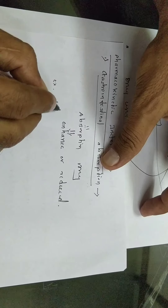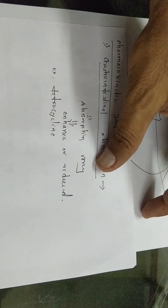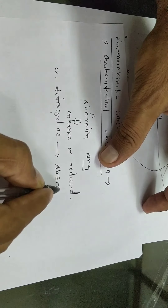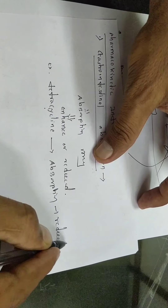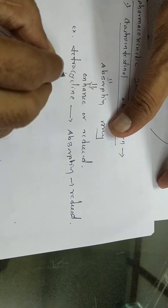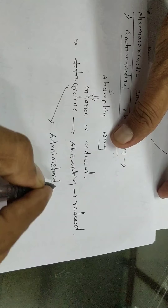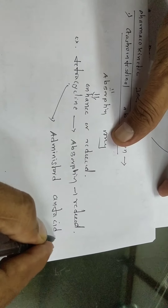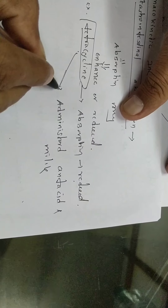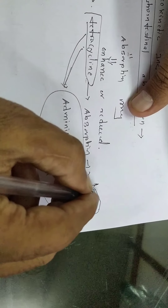For example: tetracycline is a broad-spectrum antibiotic. Tetracycline absorption is reduced when administered with antacids — this can affect and reduce their absorption. Another example: cathartics administered reduce drug absorption.